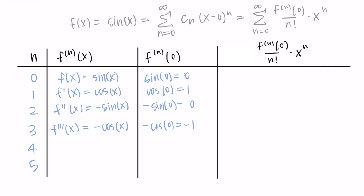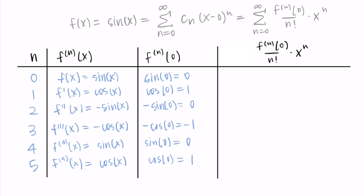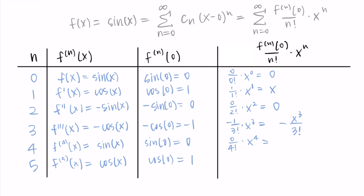For n equals three, the third derivative is negative cosine — the derivative of negative sine — and evaluating at zero gives negative one. For n equals four, the derivative of negative cosine is sine, and we're back to where we started: sine of zero is zero. For n equals five, the fifth derivative is cosine, and cosine at zero is one. So dividing each derivative value at zero by n factorial and multiplying by x to the n, I get zero, then x, then zero, then negative x cubed over three factorial, then zero, then x to the fifth over five factorial.